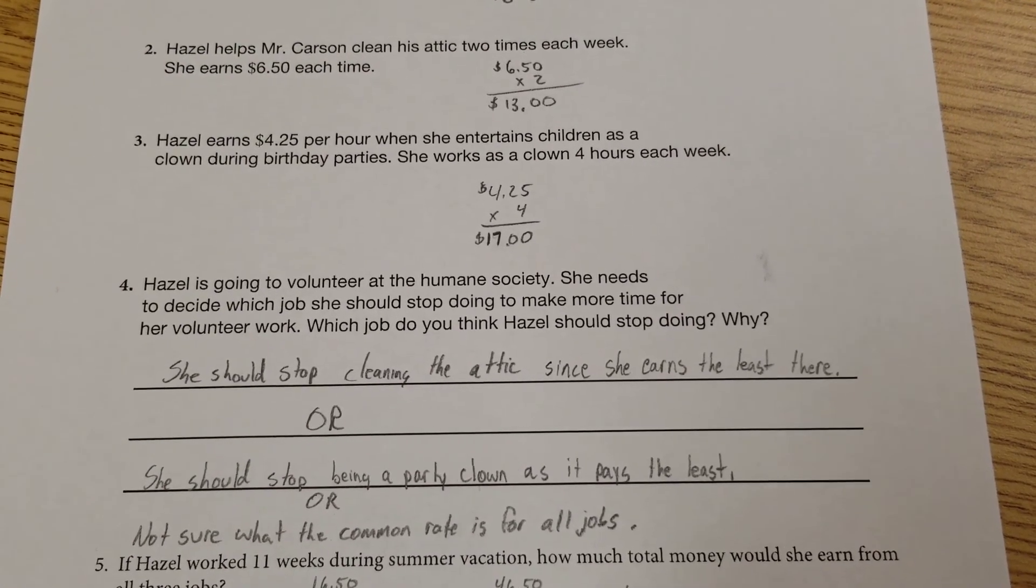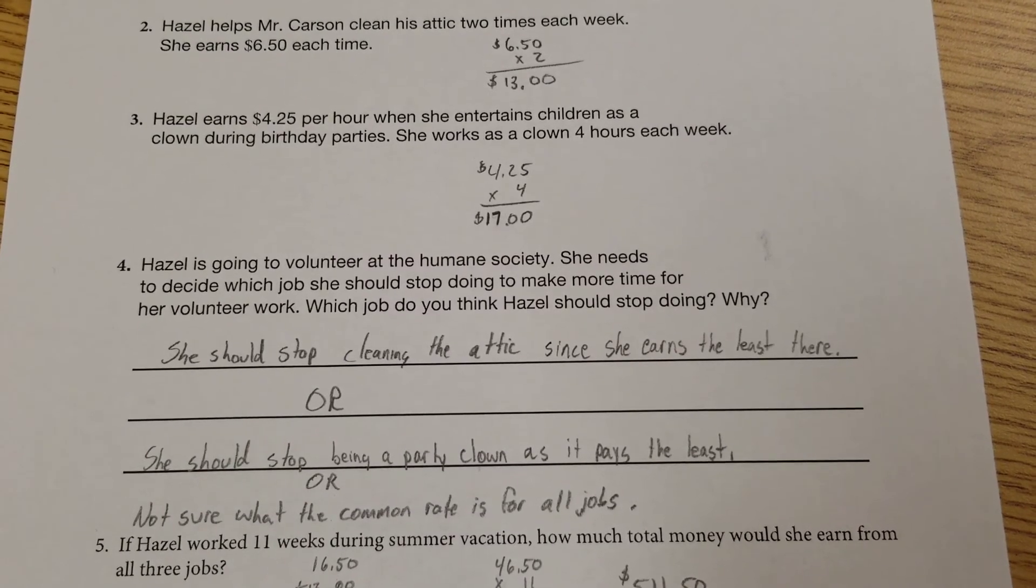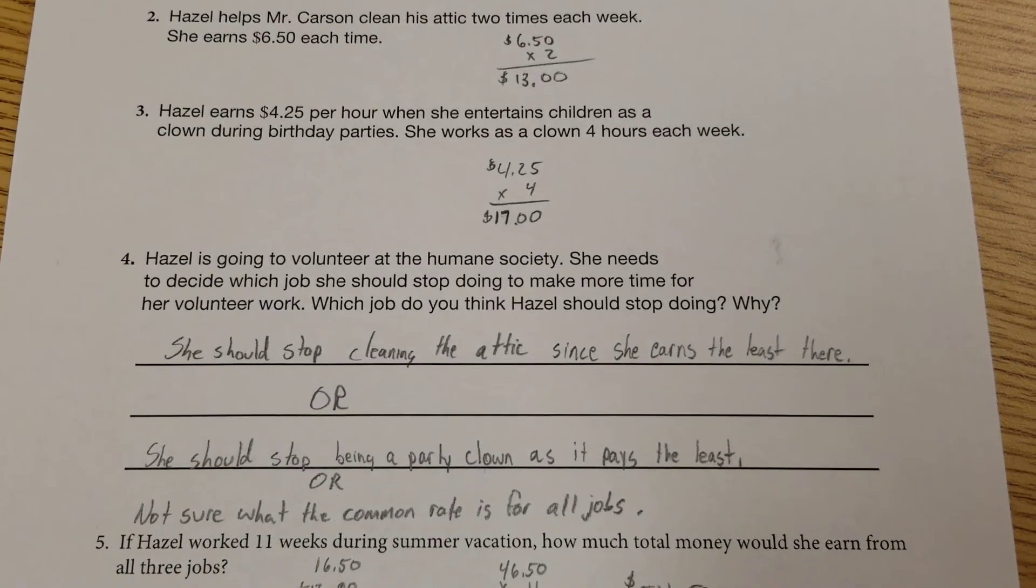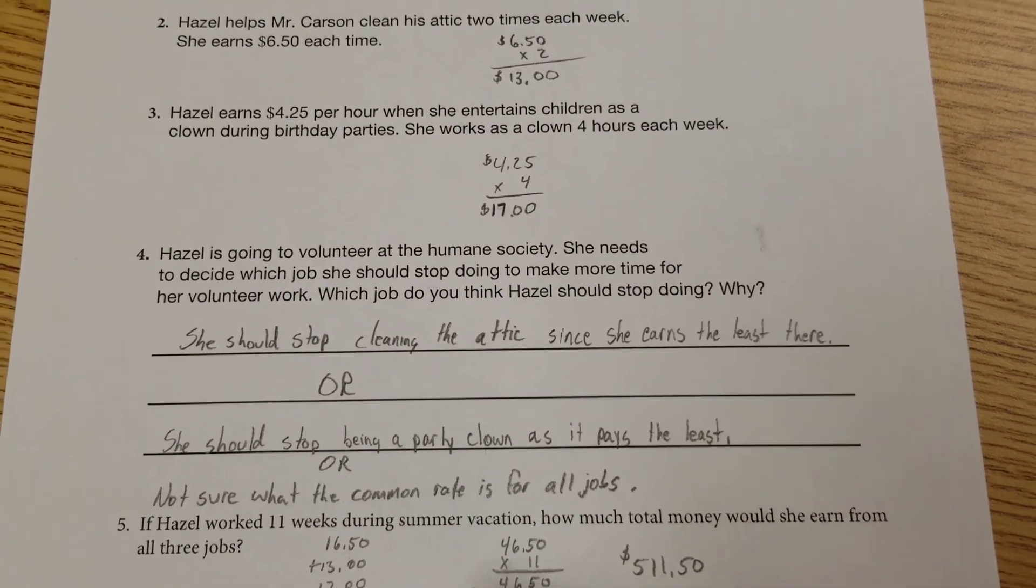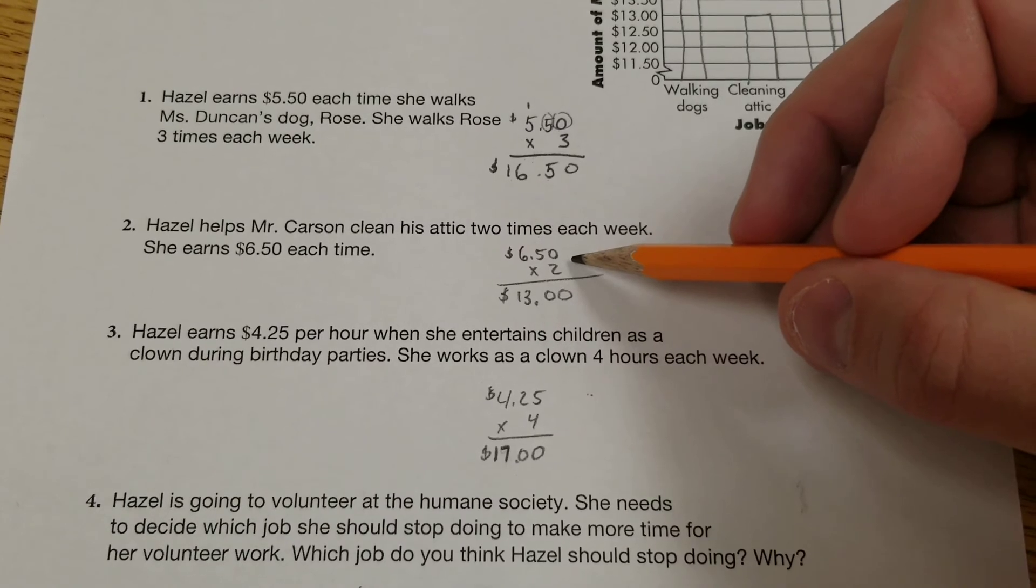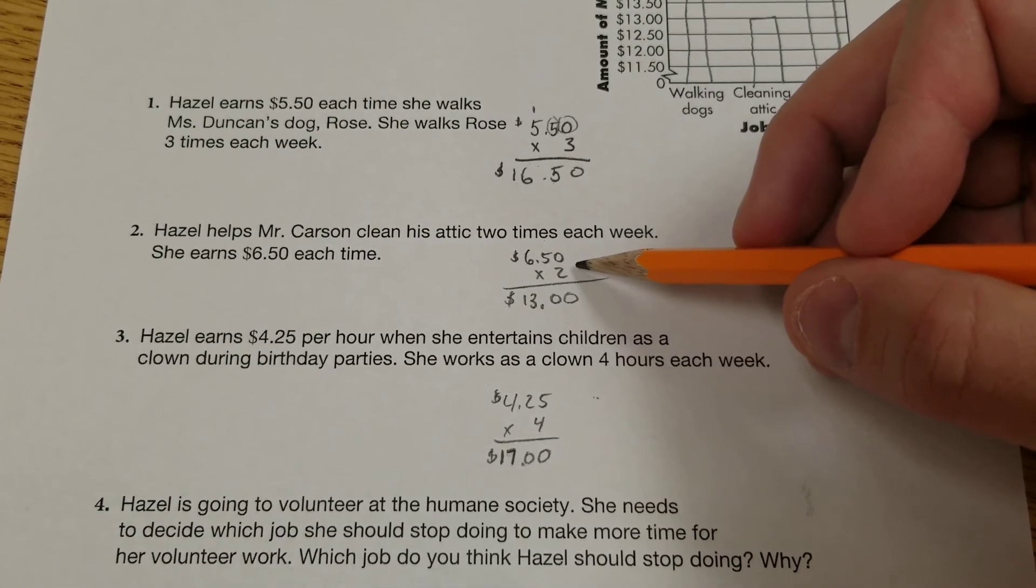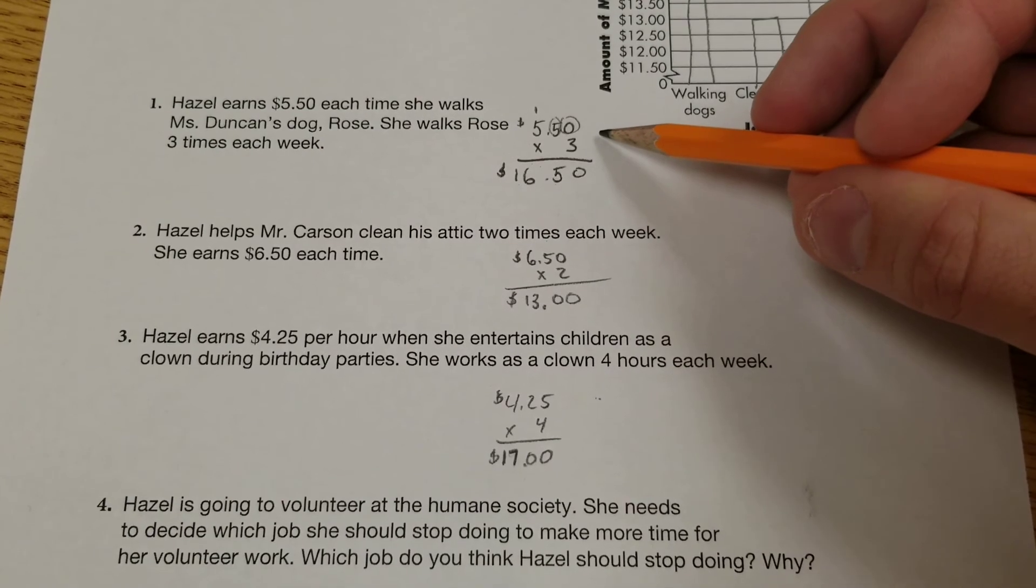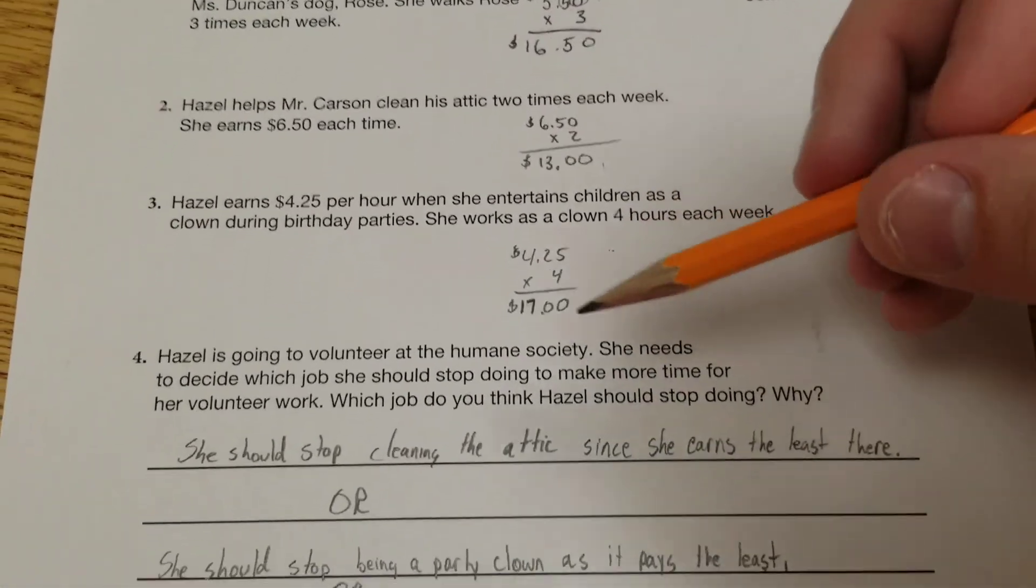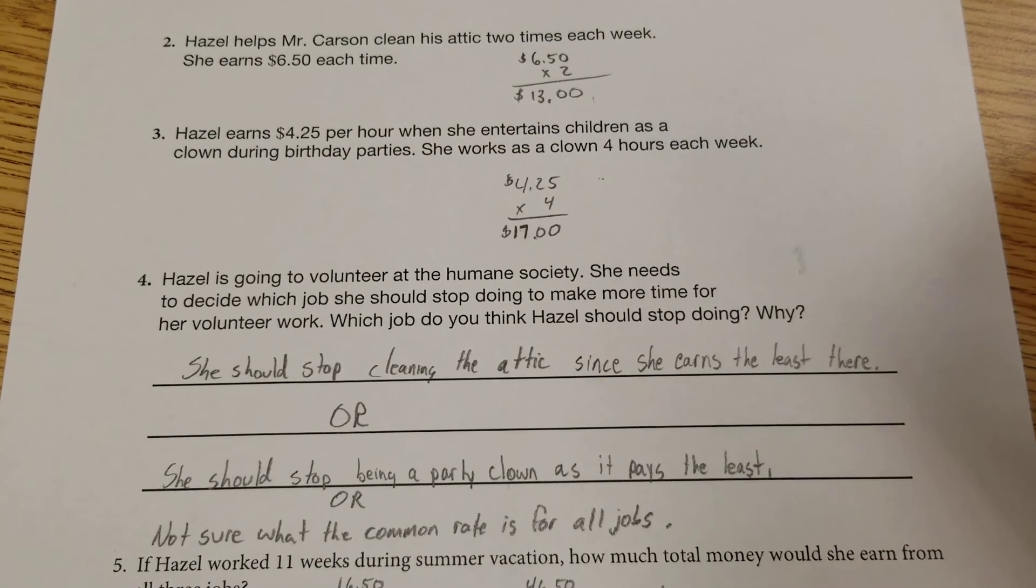Which job should he get rid of? Maybe you said he should stop cleaning the attic since that earns the least of the three. Okay. Maybe she should stop being a clown because it pays the least, it only gets $4.25 an hour, which is the least amount of them. Or really, my answer is I'm not sure because there's not a common rate for all the jobs. What I mean is, I know how much I'm making an hour here, it's $4.25. I know I'm making $6.50 per attic. I don't know how many hours that takes. Is that a good deal or a bad deal? I don't know. I don't know how much time I spend. And then walking the dogs, again, I don't know how much time I spend. I mean, is that like five hours? Is it one hour? I don't know how much it is. So really, my answer is I'm not for sure. Maybe give up the one she doesn't like the most. But we really need more information to make an educated decision which one to get rid of.